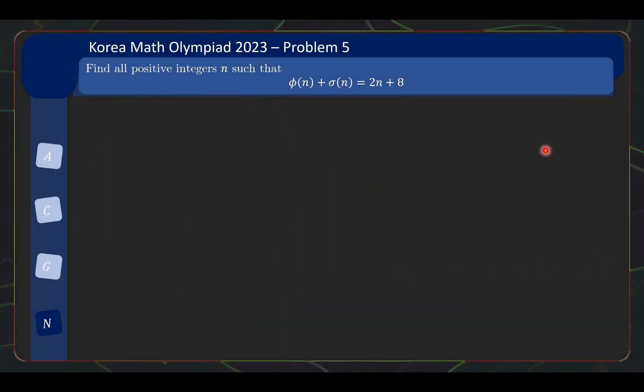As I mentioned, this is problem 5 from the Korean Math Olympiad 2023. Note that the Olympiad consists of two parts and each part has four problems. So problem 5 is supposed to be the easiest problem from the second set. Let's take a look at the question. Find all positive integers n such that φ(n) + σ(n) = 2n + 8. That's it, a short and sweet problem.